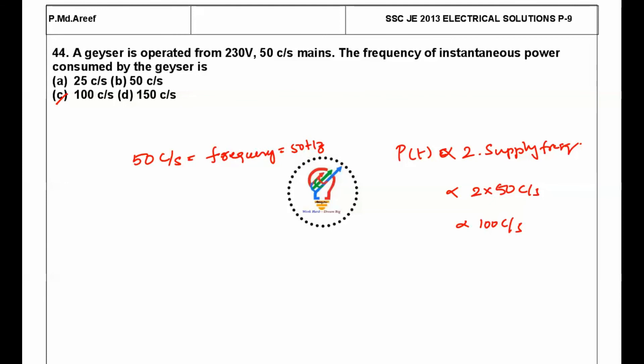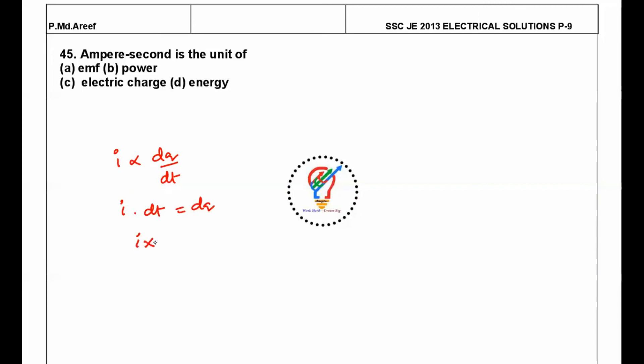Next question: ampere-second is a unit of? Current is I = dq/dt, so I × dt = dq. We can write I × t = q. That is, ampere-second is a unit of electric charge.